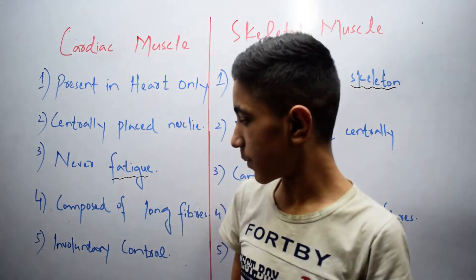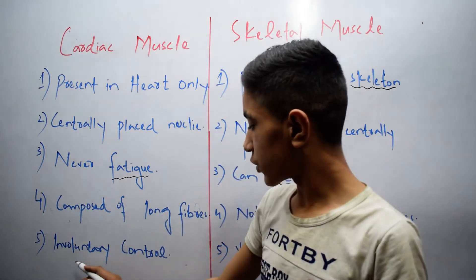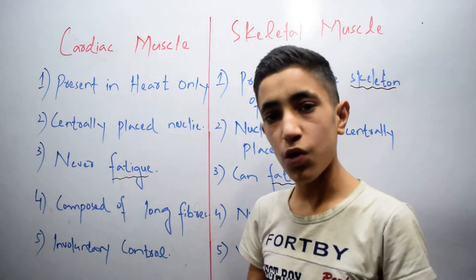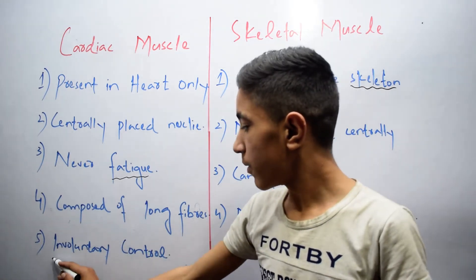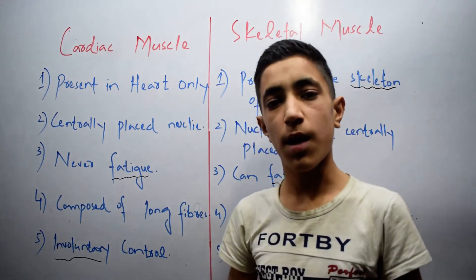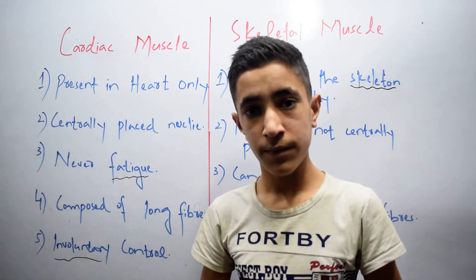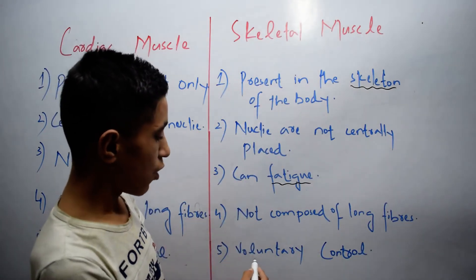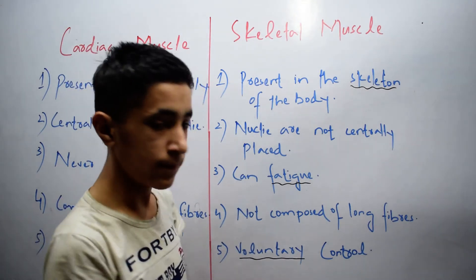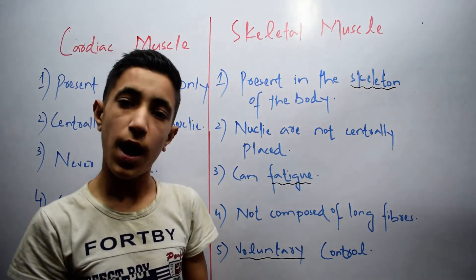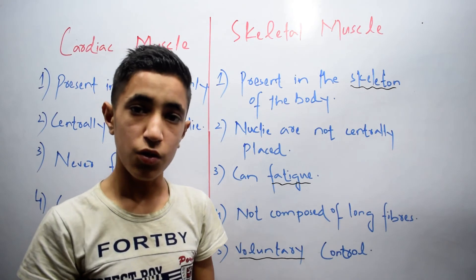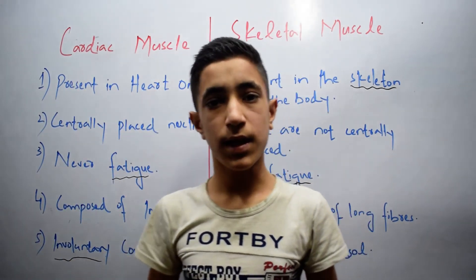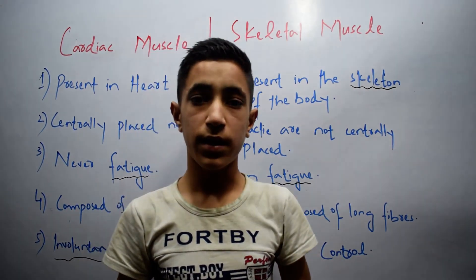The last difference is involuntary control. Cardiac muscle is under involuntary control, meaning it is not controlled by our will, while skeletal muscle is under voluntary control — they are controlled by our body. So this was all about the difference between cardiac muscle and skeletal muscle. Thanks for watching.